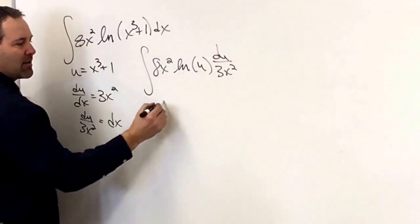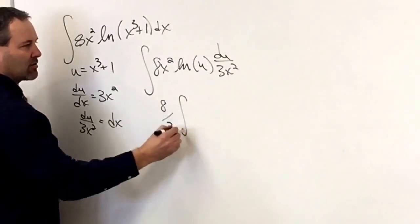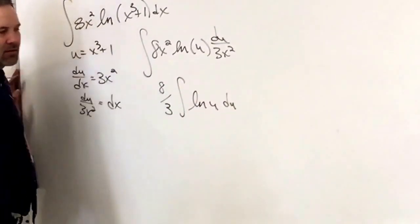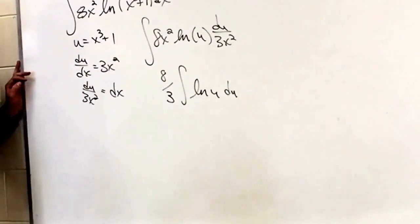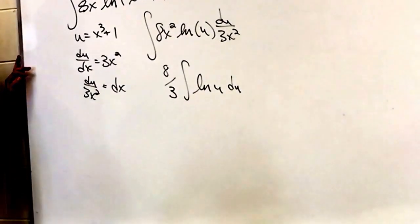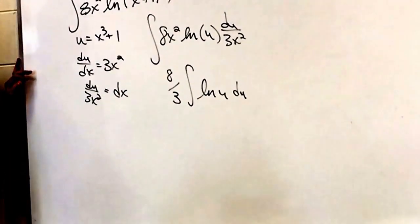Natural log of u du. 1 over u. We don't know the anti-derivative of natural log of u.